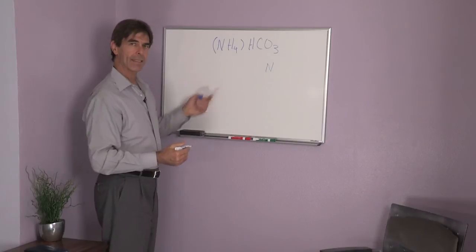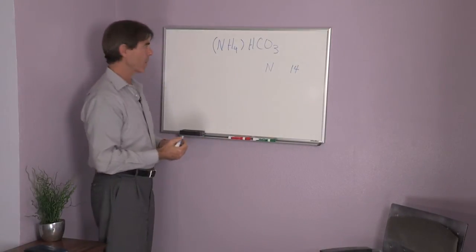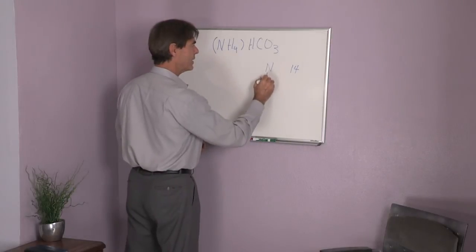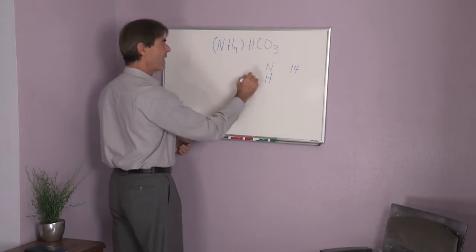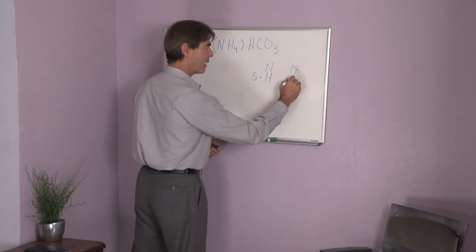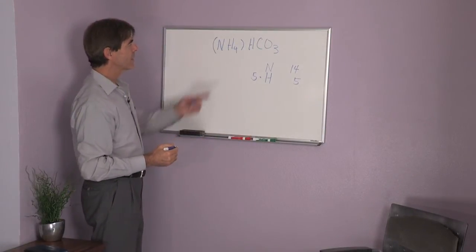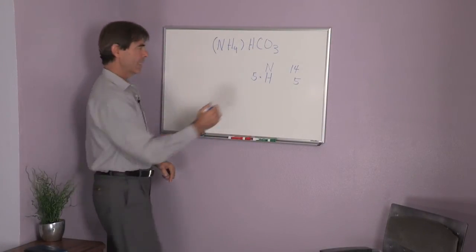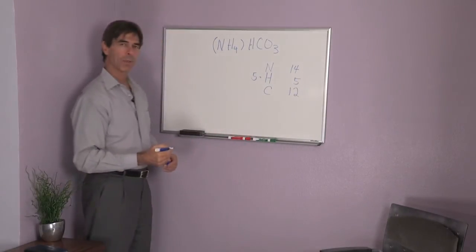Nitrogen has 14 grams per mole. Hydrogen has 1 gram per mole, but we have 5 of them. So we have to multiply that by 5, 1 gram per mole by 5. Carbon has 12 grams per mole.